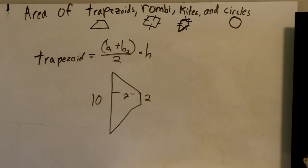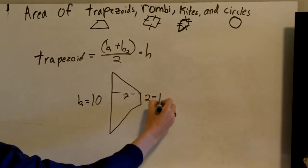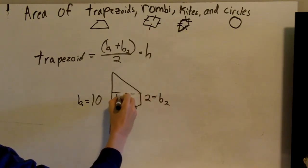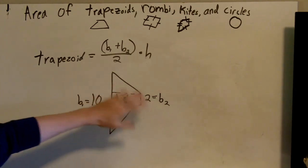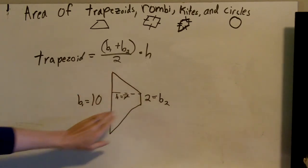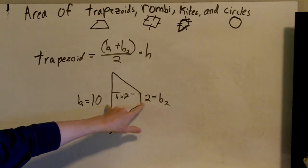So what I'm going to do is mark down which one is base one. Base one equals ten. Base two equals two. And the height is seven. Now it doesn't have to be the top and the bottom. It can be the left and the right, as long as it's the parallel sides.